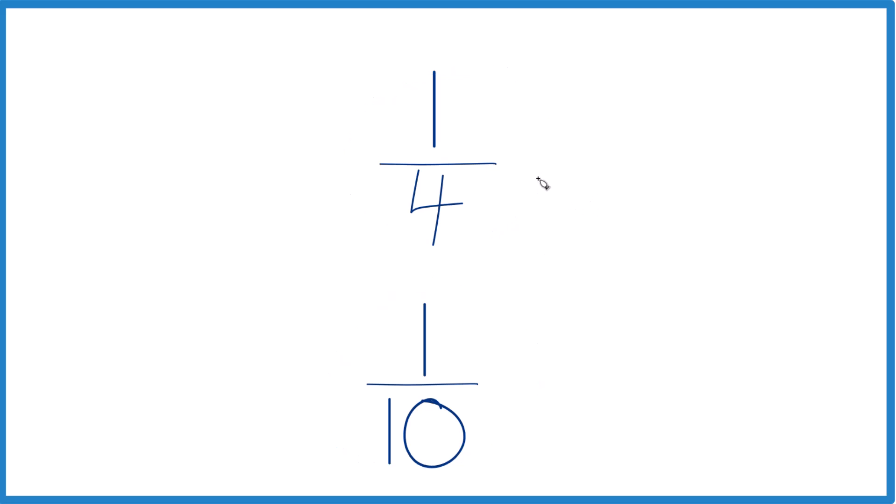The way to think about this is if you imagine you have one object and you divide it into four pieces, and then you have one object and you divide it into ten pieces. Each one of these four pieces is going to be a lot larger than each one of these ten pieces. That's a good way to think about it.